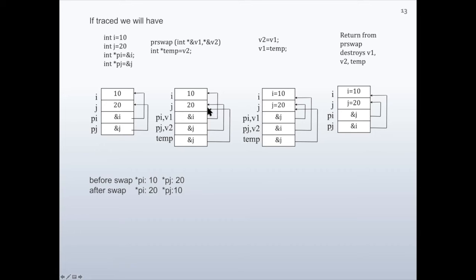Then v2 is assigned the value of v1, so v2 now holds the address of i. And v1 is assigned the value of temp, so the content of v1 becomes the address of j. Because v1 and v2 are references to pi and pj, the content of pi becomes the address of j and the content of pj becomes the address of i, after execution of these two lines.